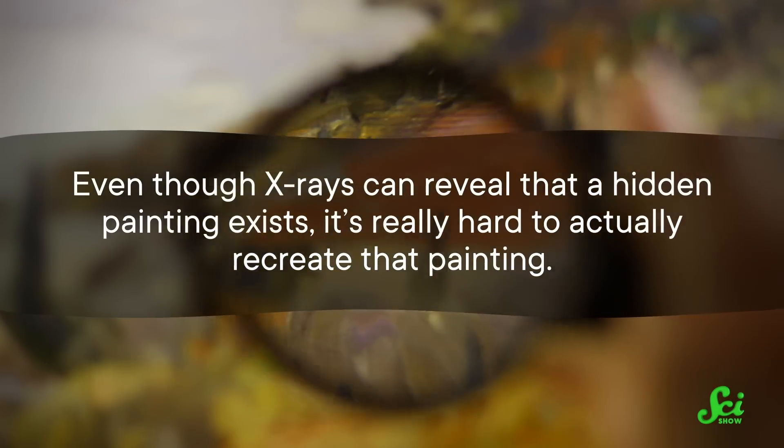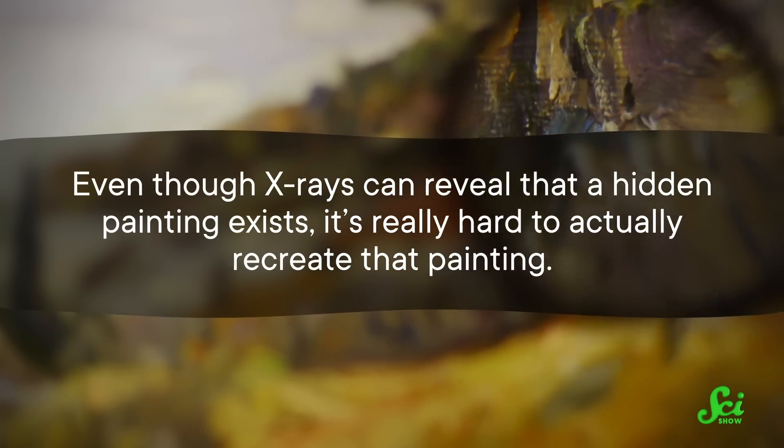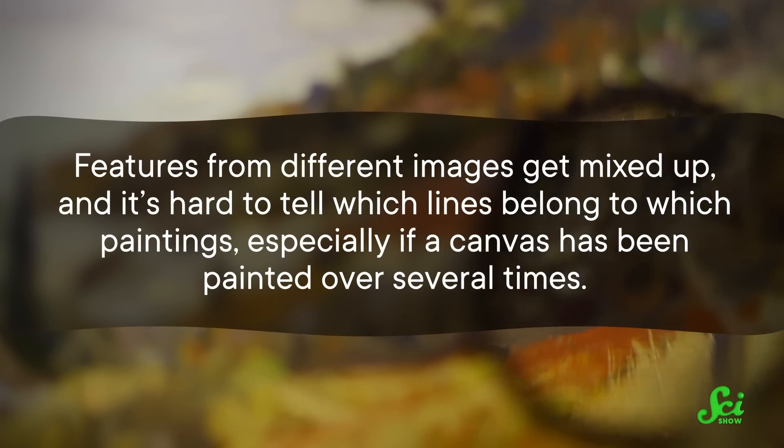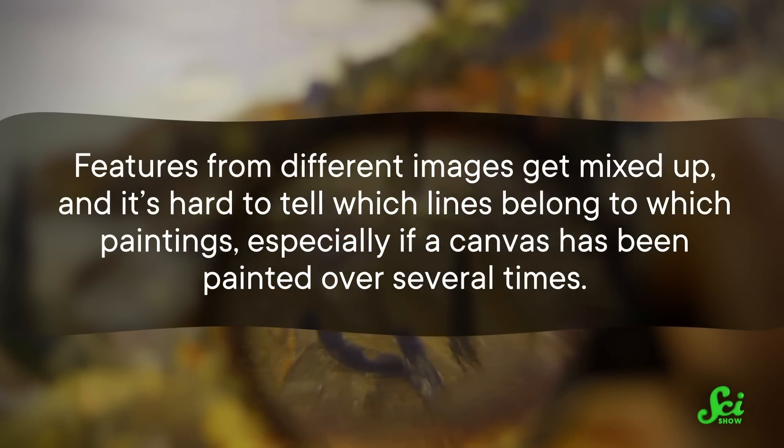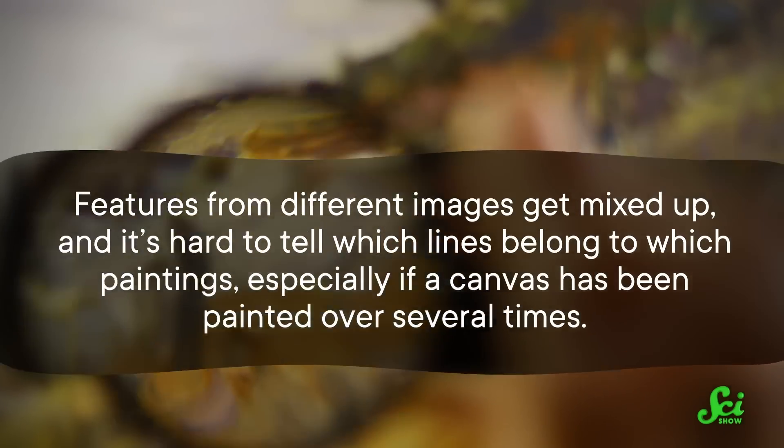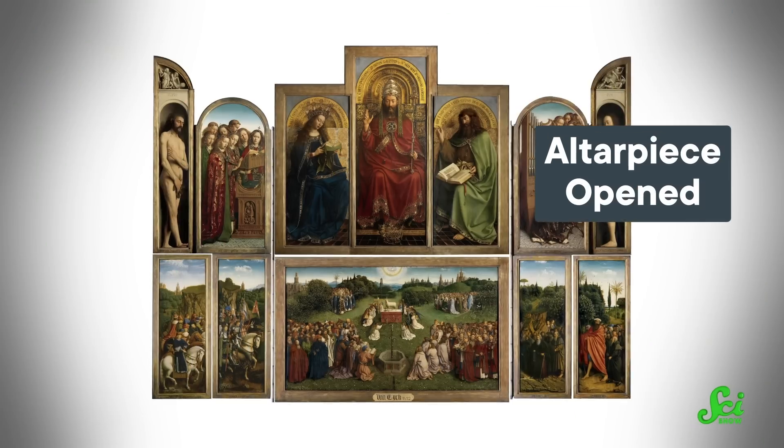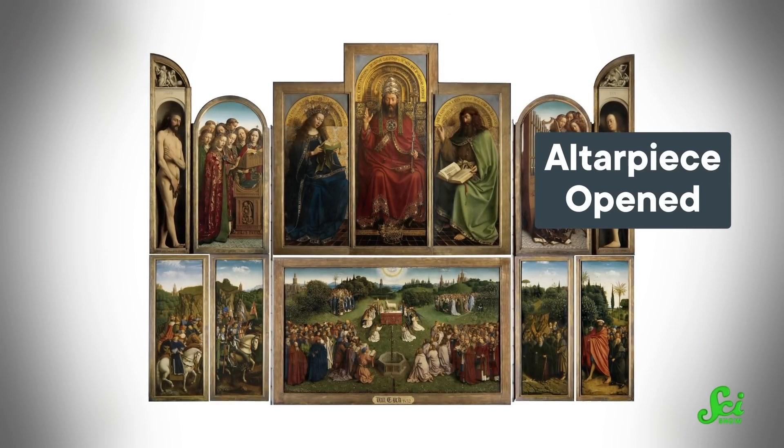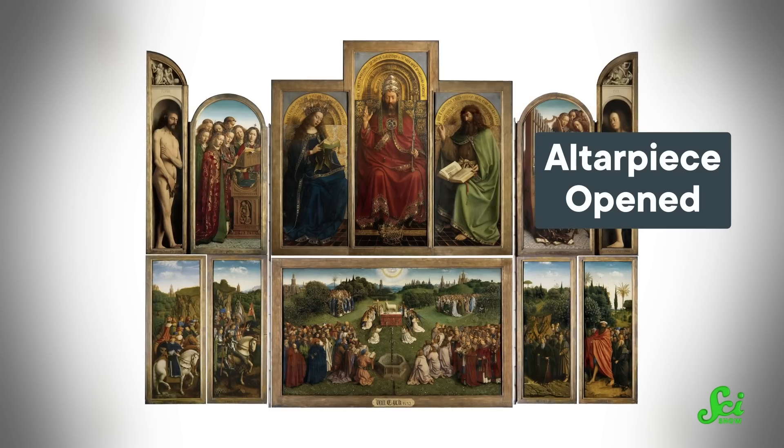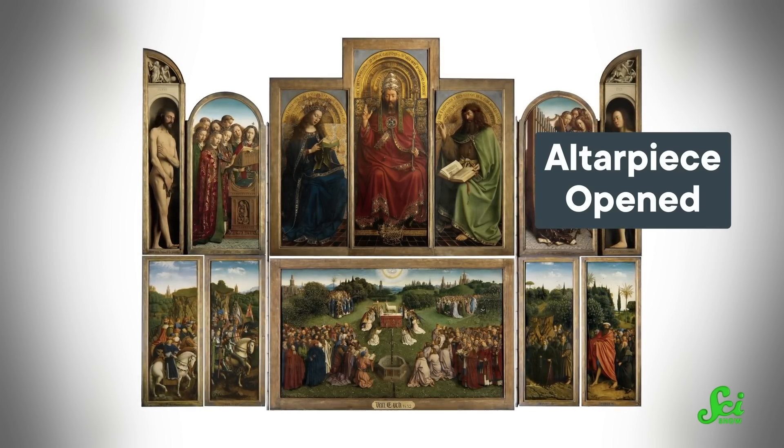This kind of thing fascinates art lovers, because these hidden paintings can reveal what else was on the artist's mind, or what they wanted to cover up. But even though X-rays can reveal that a hidden painting exists, it's really hard to actually recreate that painting. Features from different images get mixed up, and it's hard to tell which lines belong to which paintings, especially if a canvas has been painted over several times. But once again, math can help. And some of the same researchers who worked on decoding the text in the Ghent altarpiece were able to develop a sort of answer key for future research into paintings under paintings.